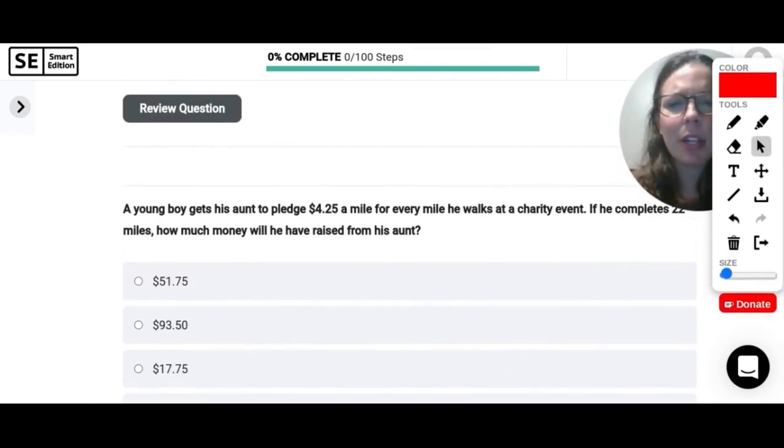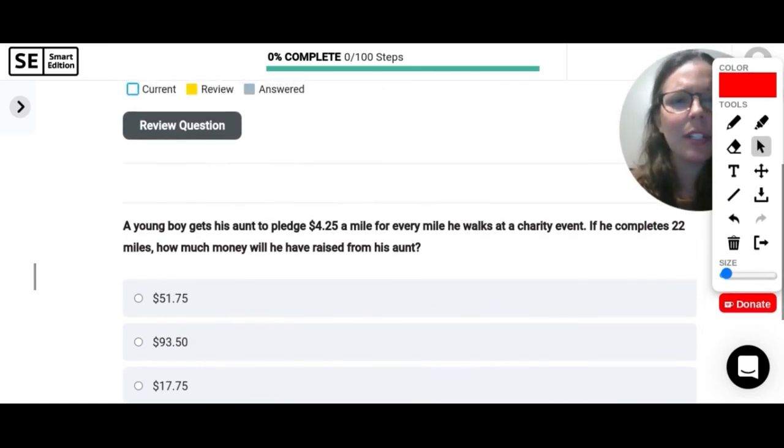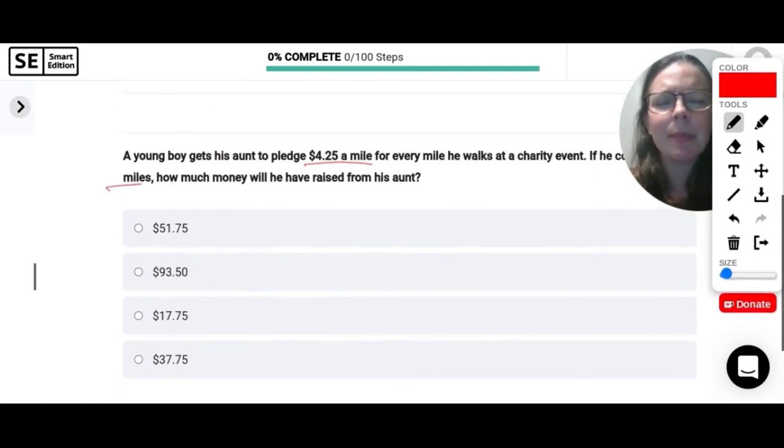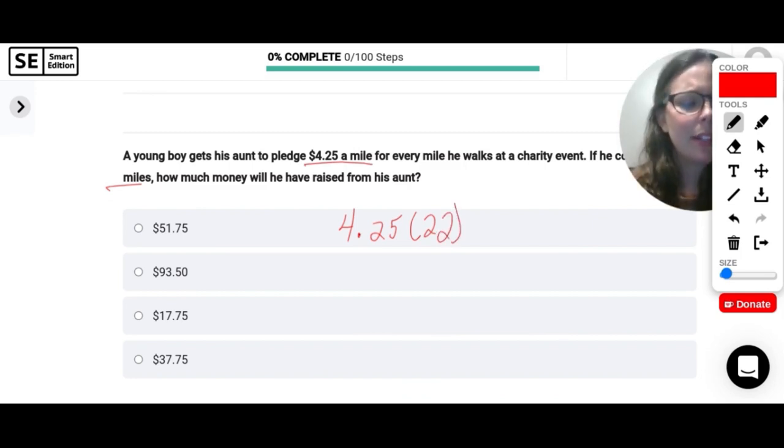A young boy gets his aunt to pledge $4.25 a mile for every mile he walks at a charity event. It's per mile. And then he completes 22 miles. How much money will he have raised from his aunt? So for this question, we're going to take what he gets per mile and multiply it by how many miles he went. So $4.25 times 22 will get me $93.50.